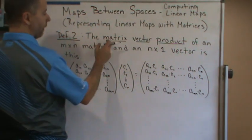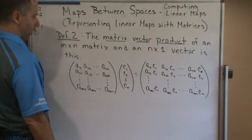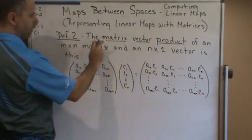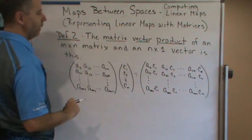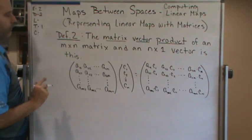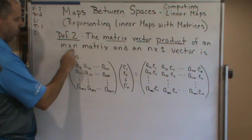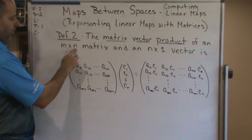The product of a matrix and a vector—it's a matrix-vector product of an M by N matrix and an N by 1 vector. Notice the N here, the number of columns.